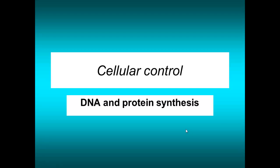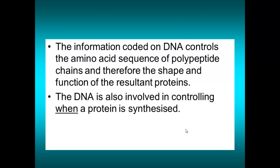This video on the general topic of cellular control is specifically on protein synthesis, going through transcription and translation. We have information coded in DNA that controls the amino acid sequence of polypeptide chains. The polypeptide chain folds in a particular way because the sequence of R groups has been determined in a particular way. Therefore, the sequence leads to the shape of the protein and that gives its function. DNA not only codes for the protein itself, but also controls when a protein is synthesized through regulated genes.